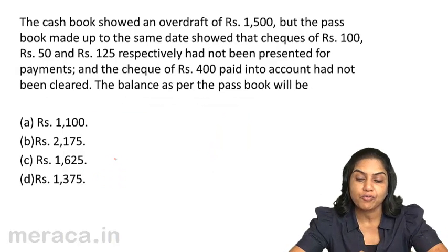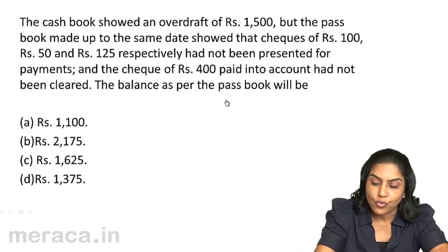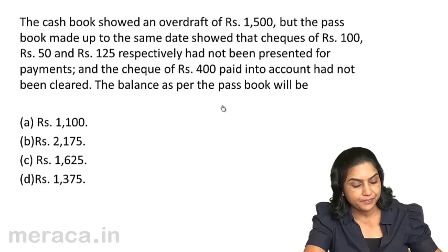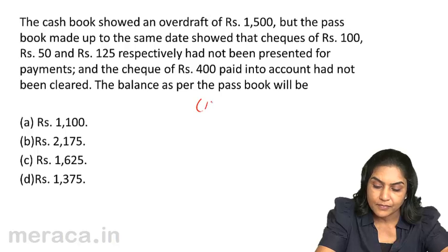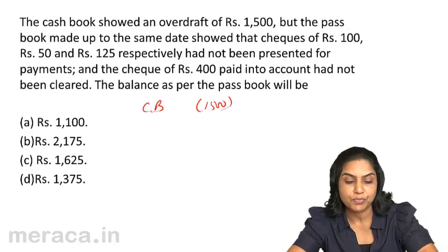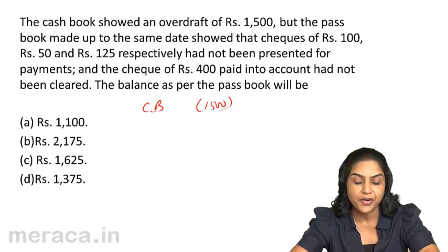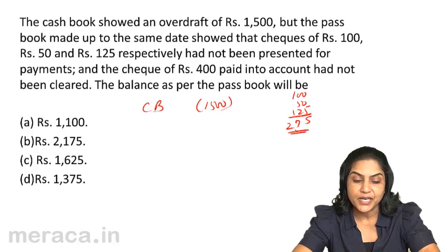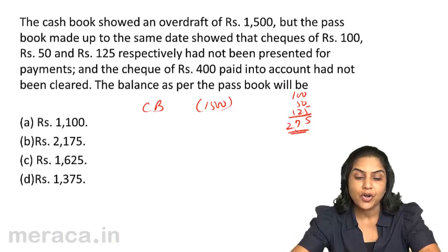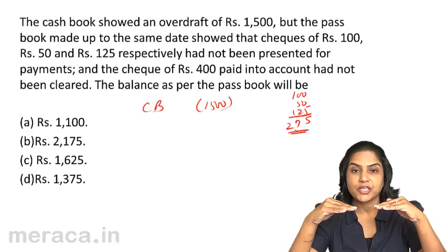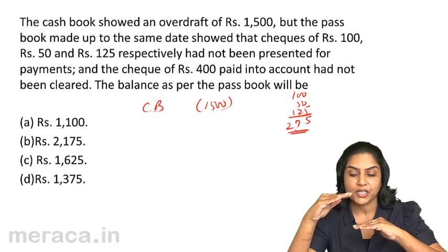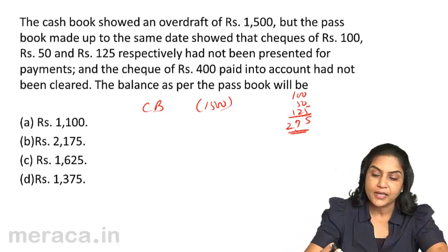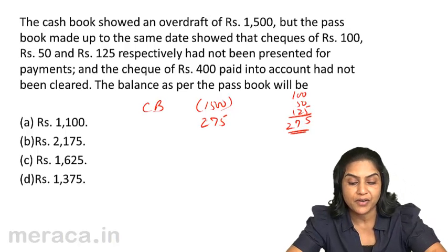The cash book showed an overdraft of rupees 1500 — this is the overdraft as per the cash book. The pass book made up to the same date showed that checks of rupees 100, 50, and 125, amounting to rupees 275, have not been presented for payment. This means that checks were issued but not presented. If checks were issued and not presented, starting from the cash book to the pass book, we will add. So we add 275 to minus 1500.